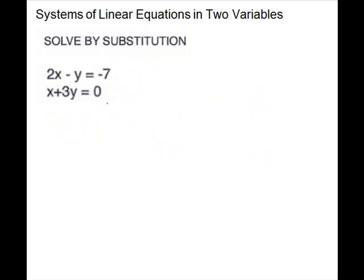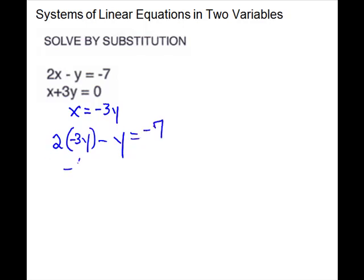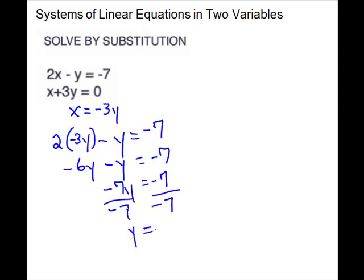For our next system, we do not have a variable isolated, but we're told to solve by substitution. So we will need to isolate a variable in one of the equations. It could be in either one — I chose to isolate the x. If I subtract 3y, I have x equals negative 3y. Now I have a variable isolated. I will substitute for that x in the first equation. So I have 2 times negative 3y minus y equals negative 7, giving me negative 6y minus y equals negative 7. Negative 7y equals negative 7. Divide by negative 7 and you get y equals positive 1.